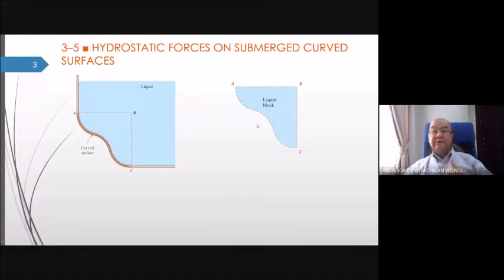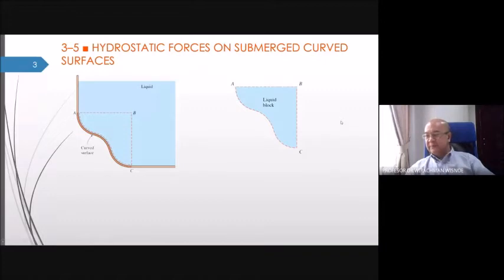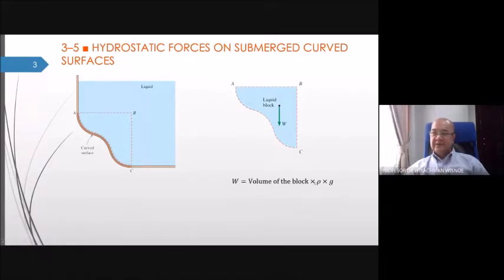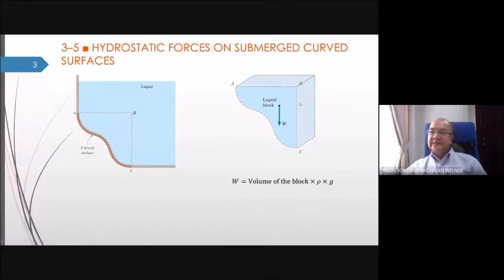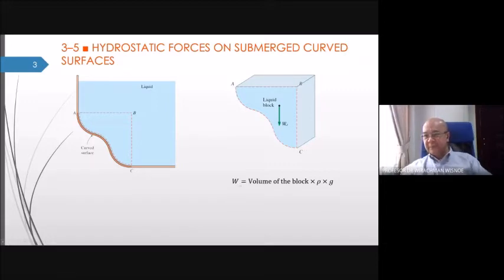We draw the free body diagram and analyze each force applied to this portion of the liquid. First, the weight: weight equals the volume of the block times rho times g. The block we are talking about is this block — if you can calculate its volume, you can calculate the weight.